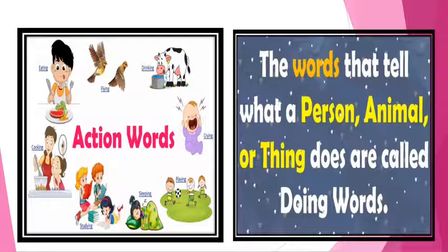Before I move on, let me ask you a question. What are you doing right now? Yes, you are watching my video. And what am I doing right now? I am teaching you through this video. Here, watching is the action performed by you and teaching is the action performed by me. So, dear children, words that tell what a person, animal, or thing does are called doing words, or action words, which are also known as verbs.